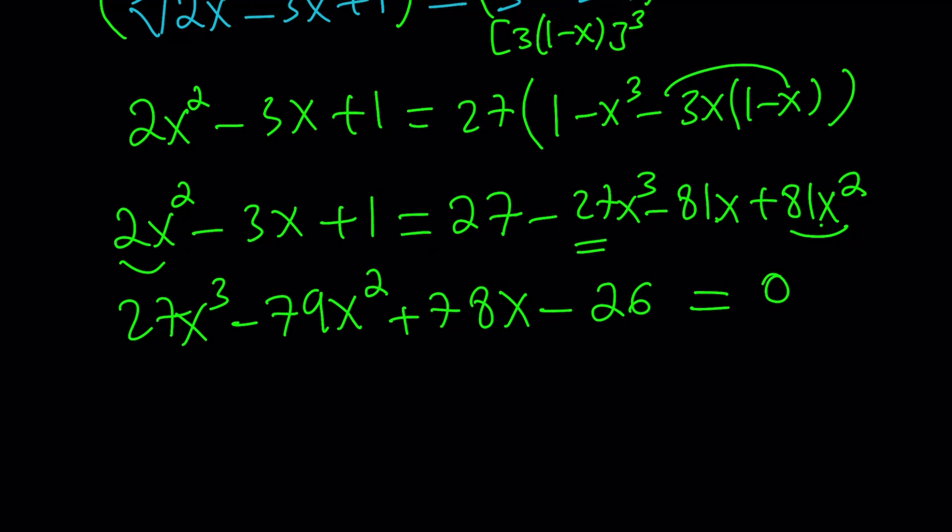Now, one thing that probably makes this problem a little easier would be checking the sum of the coefficients. First of all, take a look, because I am looking at the numbers and it looks like the sum is 0, but I have to check. 27 minus 26 is 1, negative 79 plus 78 is negative 1, so the sum is 0. Success! So x equals 1 is a solution.